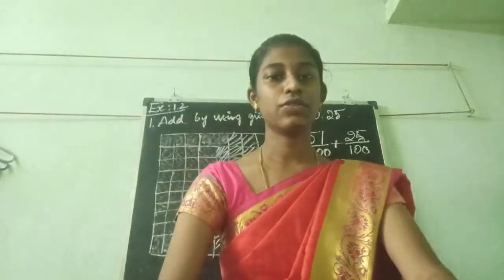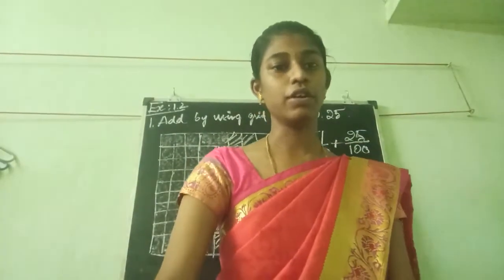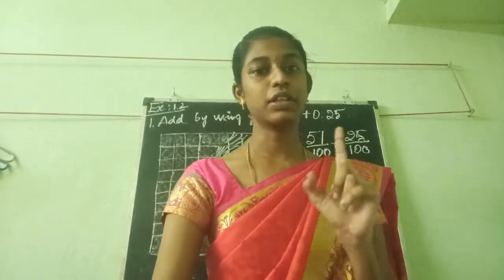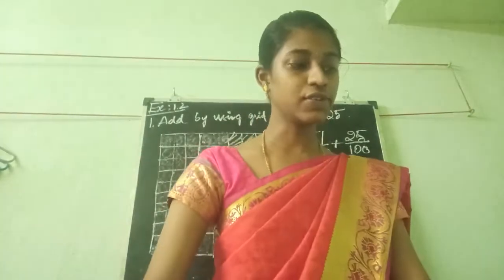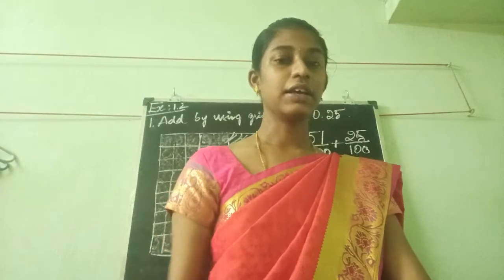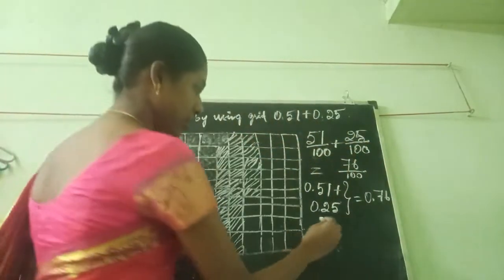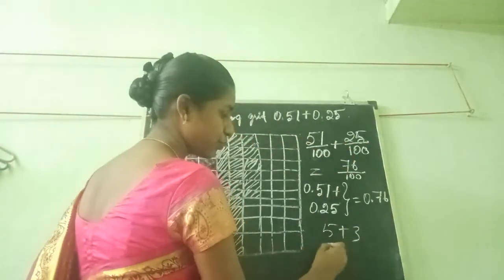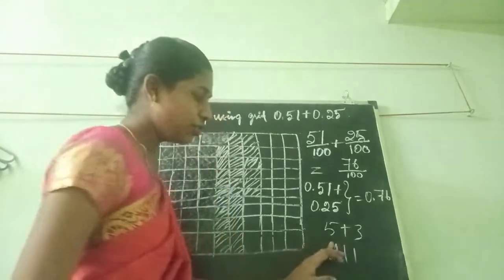In that we also see the grip model. Now we are going to see about exercise 1.2, first lesson. I am reading the question: add by using grip. Grip means in small age all of you study — like 5 plus 3, we put lines and count up.